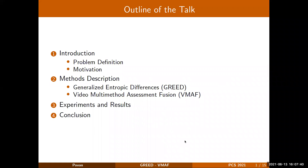I will briefly begin with an introduction to the main problem we address in this work, followed by the motivation behind choosing this problem. Later, I will discuss the proposed model, which is simply a combination of features from two different models: the centralized entropy difference model and the VMAF model. In the end, I will discuss some of the experiments we conduct in order to evaluate the proposed model and provide some concluding remarks.